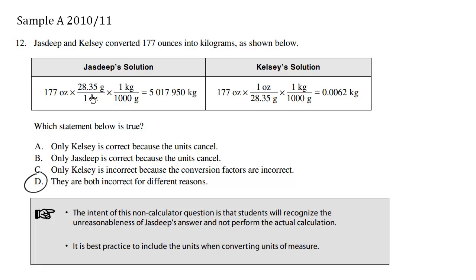Using your conversion chart, we realize that 28.35 grams is indeed approximately equal to 1 ounce, so this is okay. And multiplying by 1 here is also okay because the numerator, 1 kilogram, is the same as the denominator, which is 1000 grams.